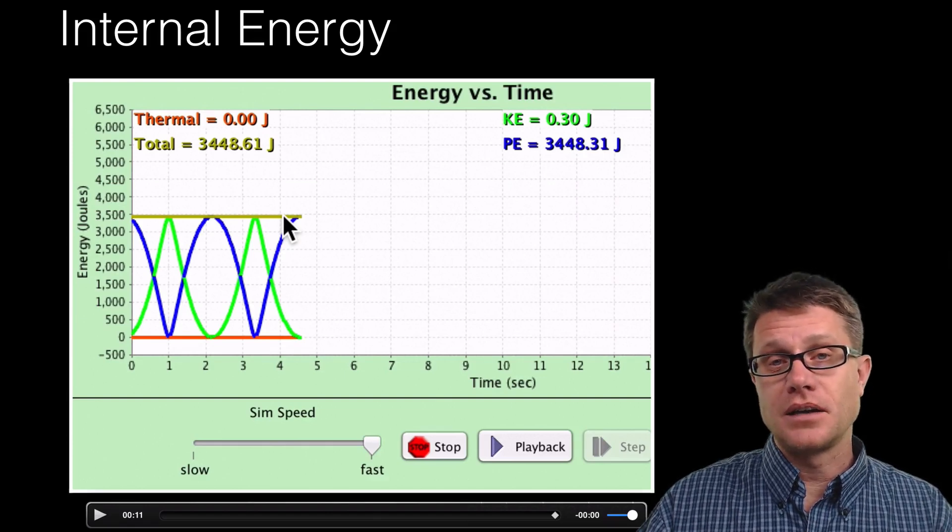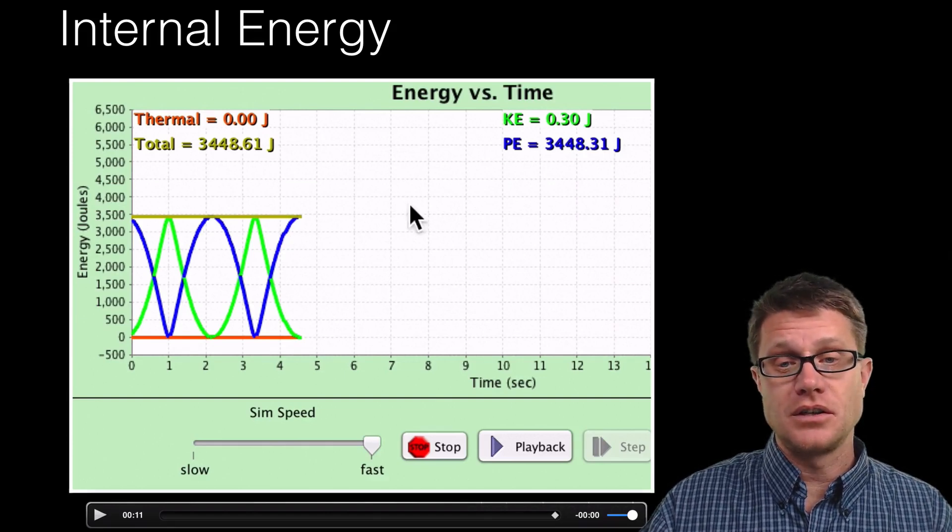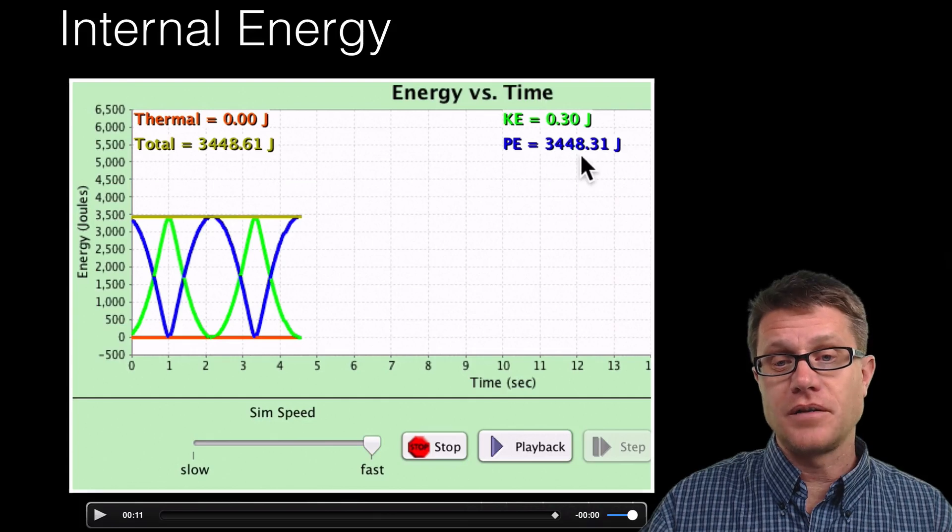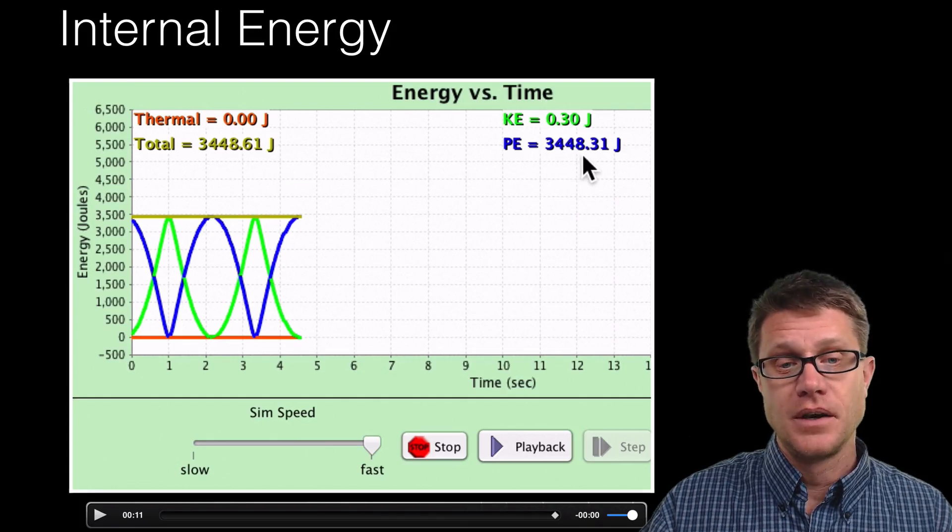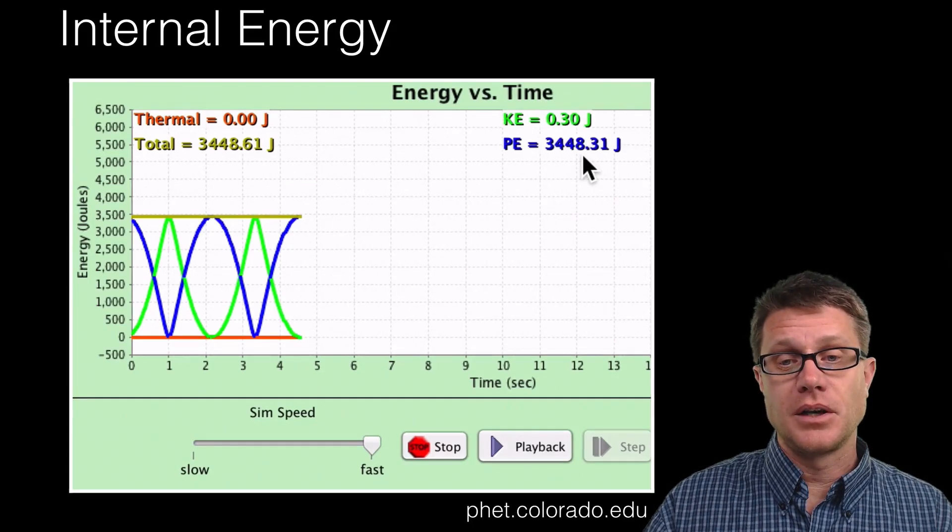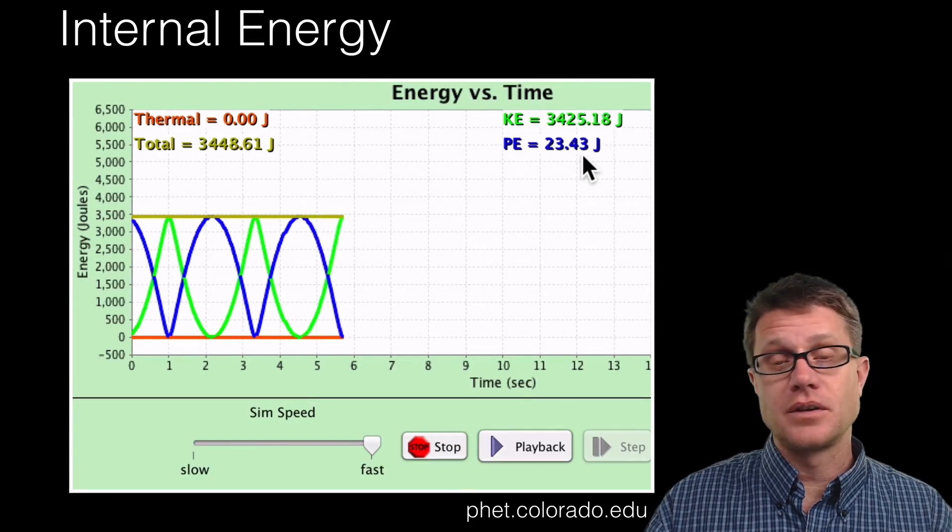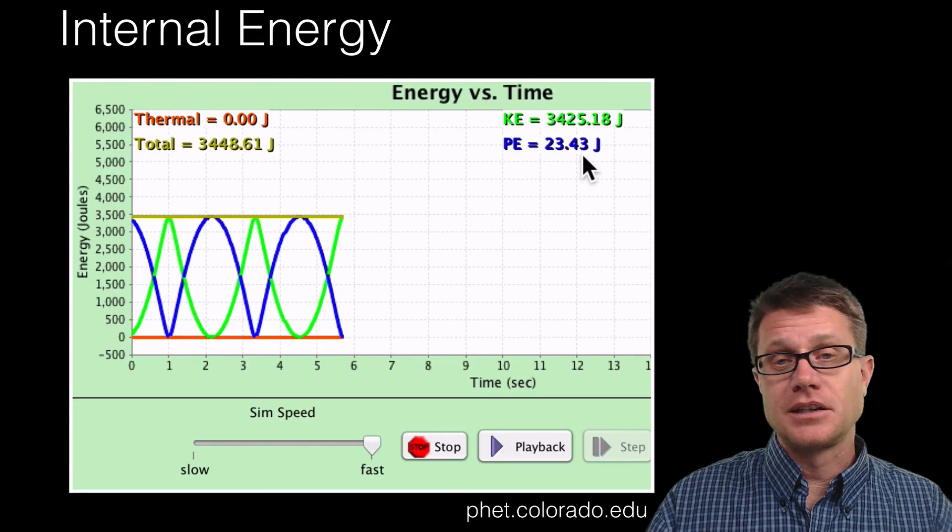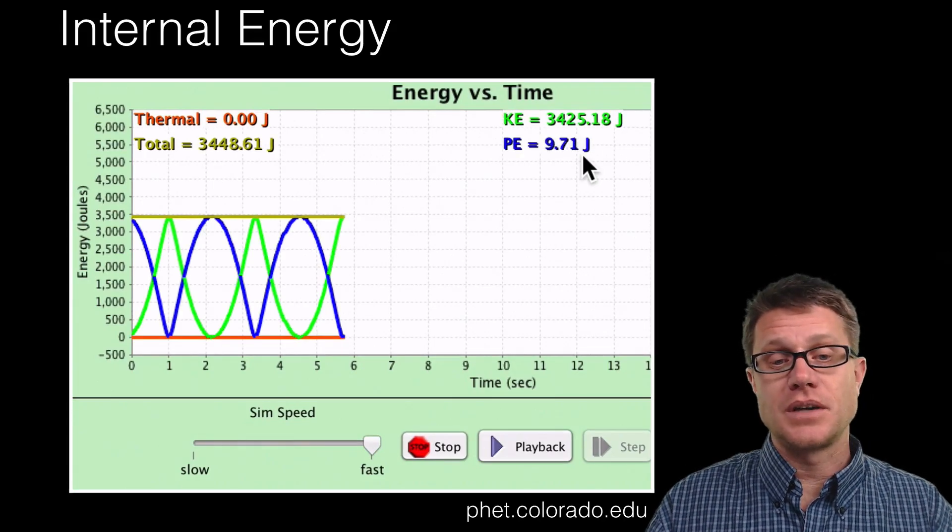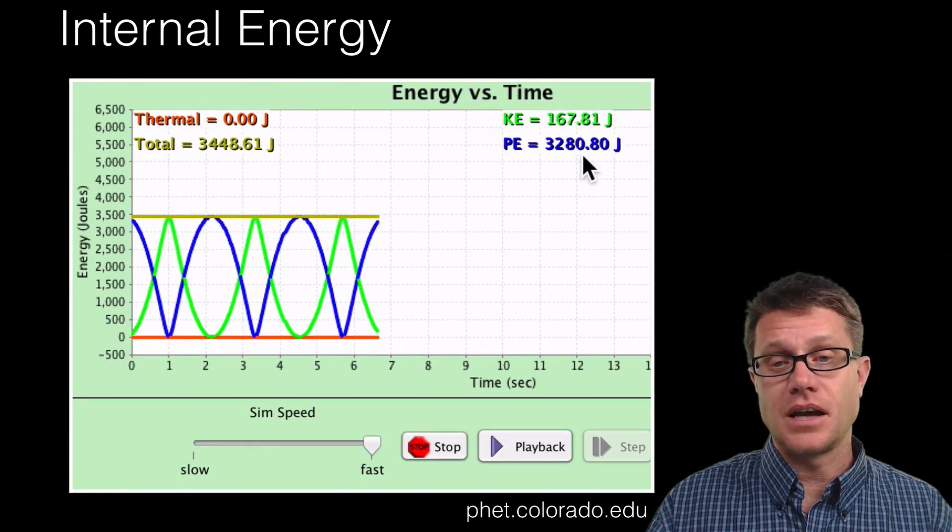What is happening is we are oscillating from energy being potential energy. You can see right now that almost all of that energy is potential energy. If I let it play forward a little bit, it is now going to be converted to kinetic energy when the skater is at the bottom of that ramp. It will just be converted back and forth from potential to kinetic to potential to kinetic.